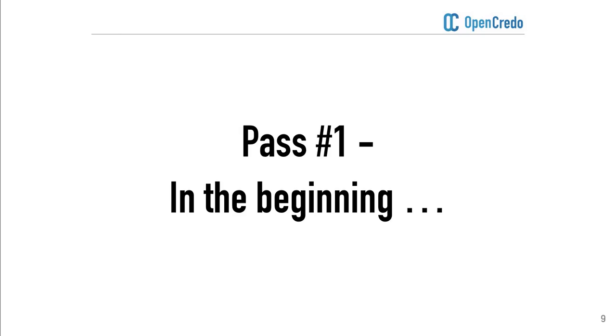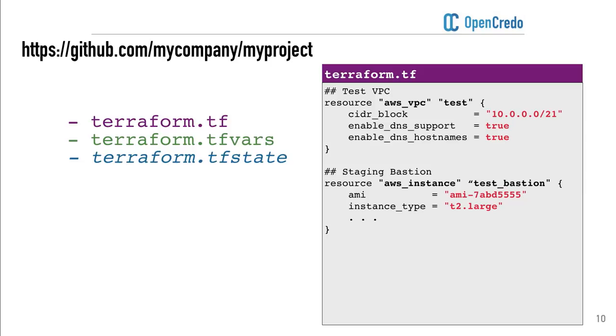We have Terri, starting out as a DevOps engineer who just discovered programmable infrastructure and Terraform. She creates a sample proof of concept to get up to speed. Quite often it'll start looking something like this: a single Terraform file defining the resources she wants to create, some hard-coded values, maybe a few variables, and a local TF state file. She likes what she sees and even starts creating the test infrastructure off the back of this.